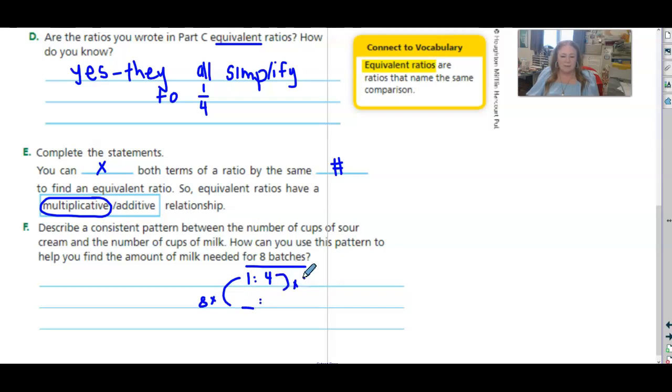And right, we're timesing it by eight. So what will this one be? Same pattern. If I wanted to make it 10 times, I'd times them both by 10. If I want to make it 30 times bigger, I'll times them both by 30. As long as we do the same thing to both sides, we'll get those equivalent fractions or equivalent ratios.